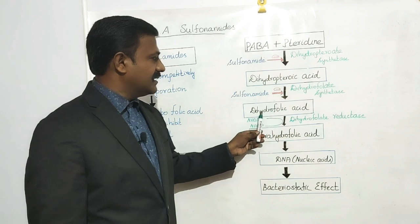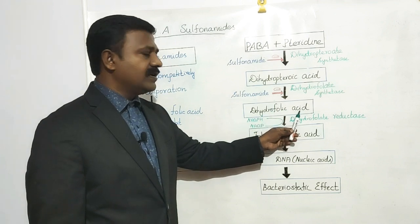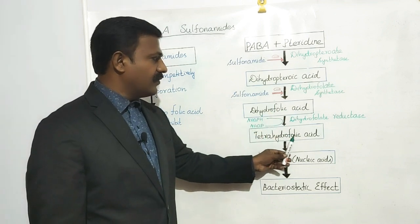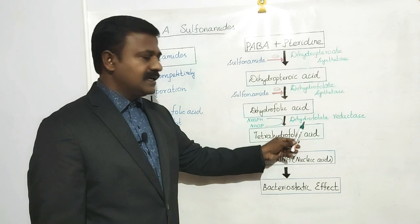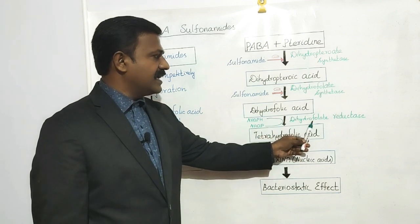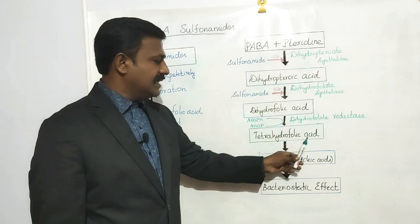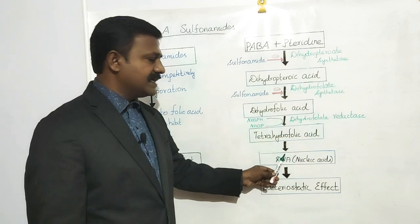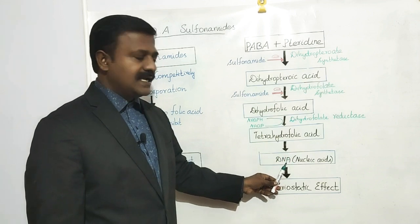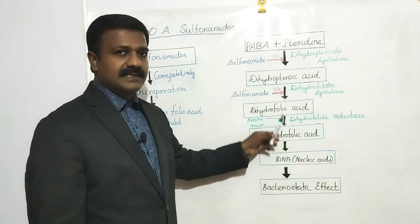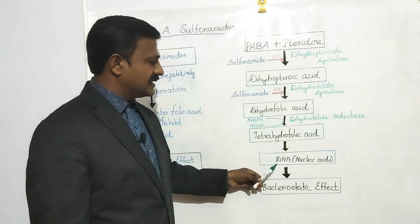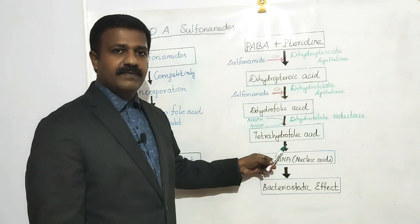And further, the dihydrofolic acid is converted into tetrahydrofolic acid in the presence of the enzyme dihydrofolate reductase. And thereby, it synthesizes folic acid and nucleic acid. This is the normal pathway for synthesis of folic acid.